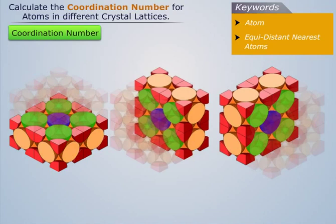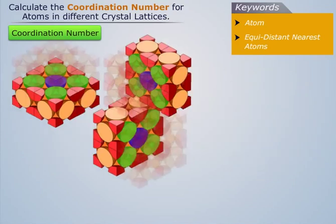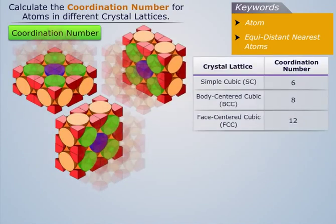The first set of four atoms is in the plane of the corner atom. Two atoms from each of the remaining sets are above, and the other two atoms from both these sets are below the plane of corner atom. Thus the coordination number for the corner atom in a face-centered cubic lattice is 12.